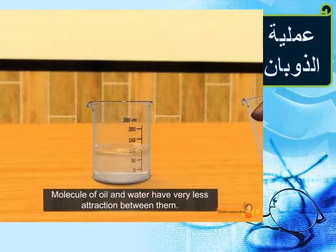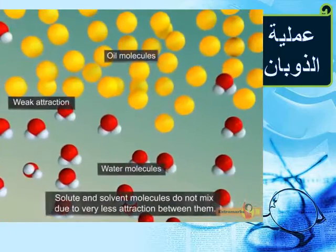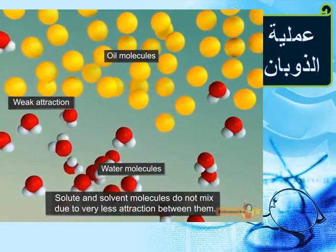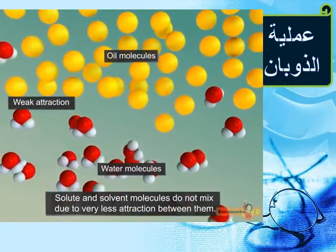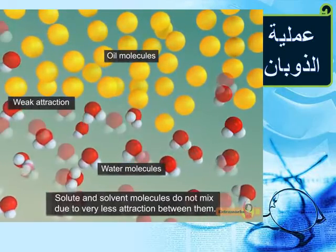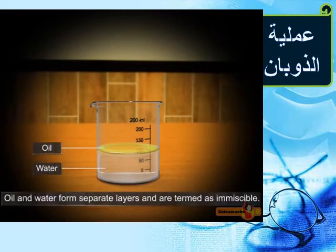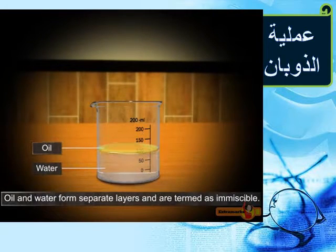Oil and water do not mix or dissolve as there is very little attraction between their molecules. The oil molecules prefer other oil molecules while water molecules stay with other water molecules. Oil and water form separate layers instead of mixing together and are referred to as immiscible.